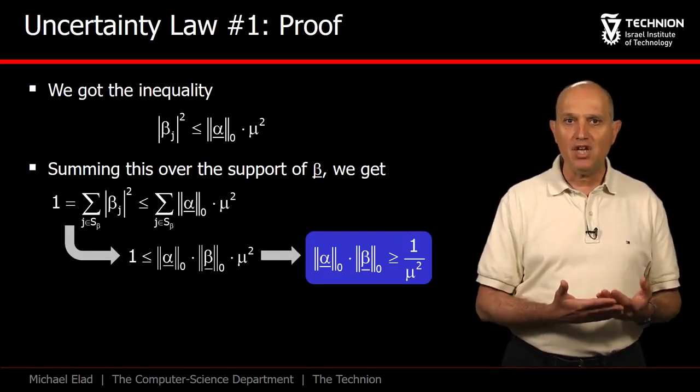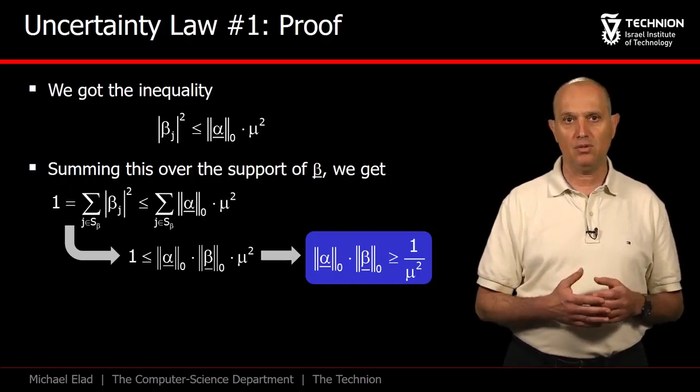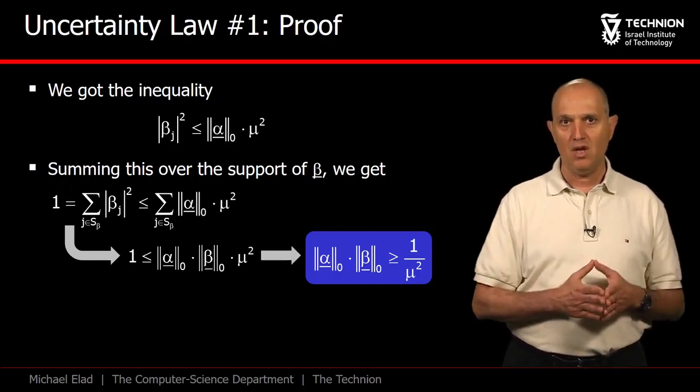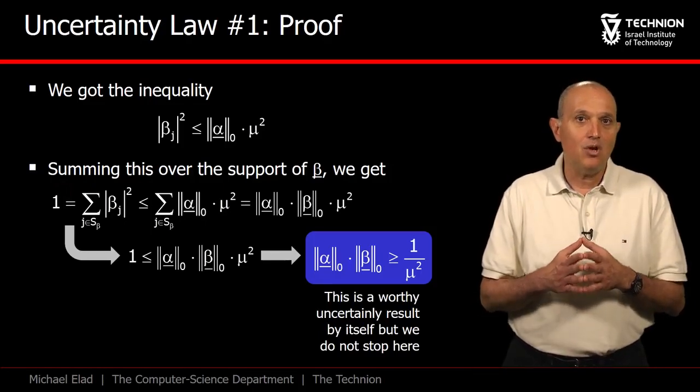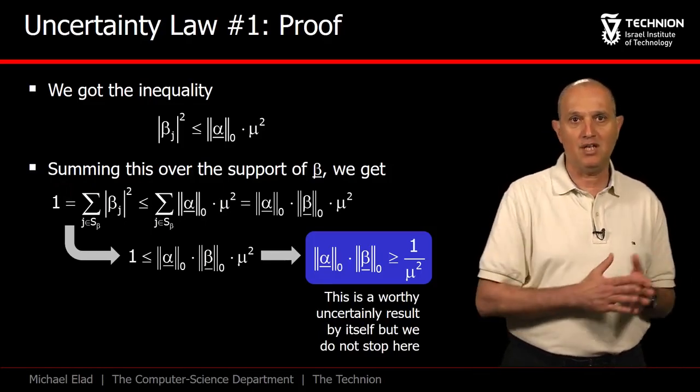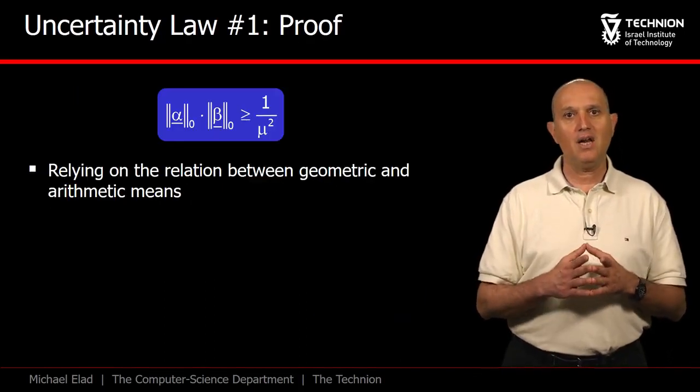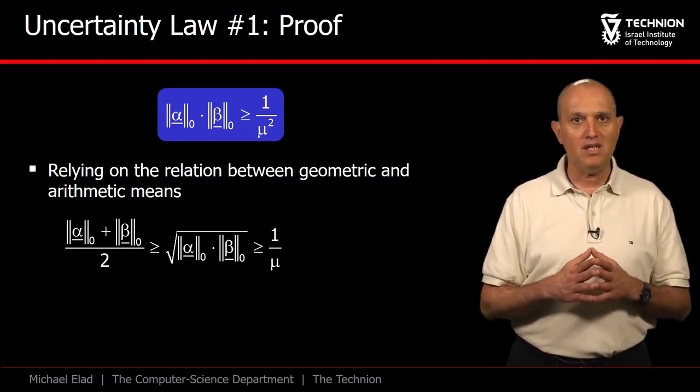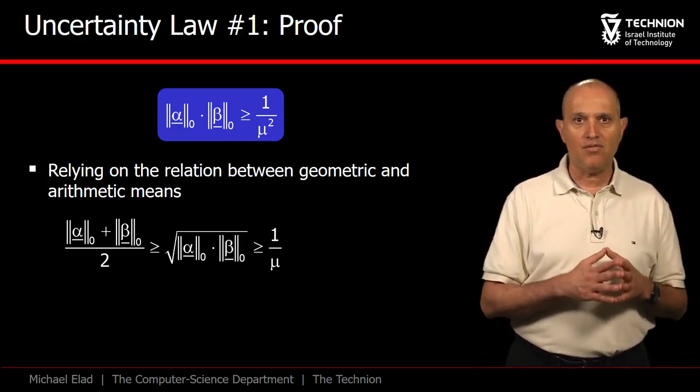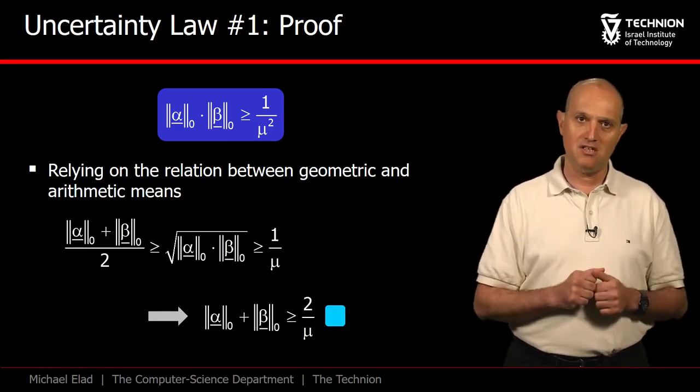From this emerges the following uncertainty rule, which states that the multiplication of the number of non-zeros in α and β must be above the threshold, being 1/μ². This is a lovely result by itself, and perhaps it is even closer in spirit to the Heisenberg relationship. But it is not the one we target. Relying on the well-known relation between arithmetic and geometric means, we easily get that the sum of the number of non-zeros is lower bounded by 2/μ, just as stated.